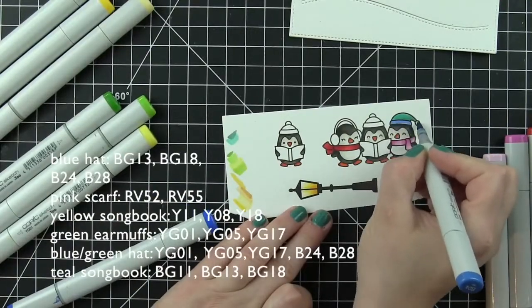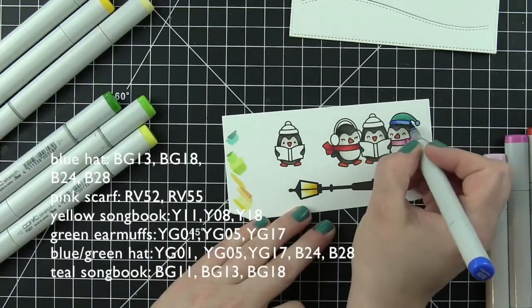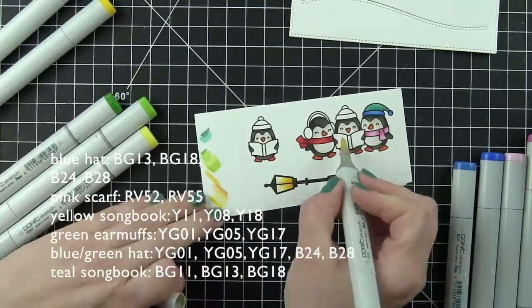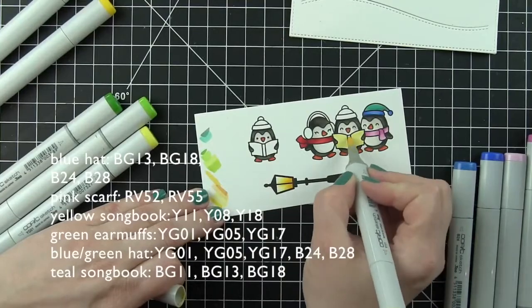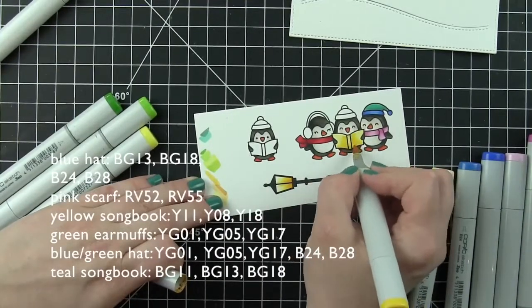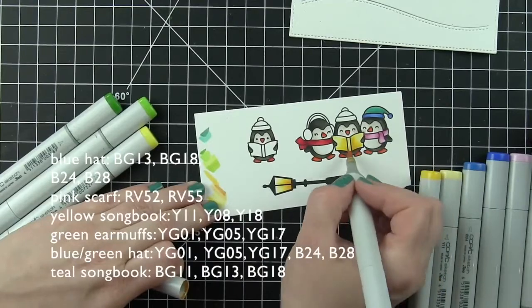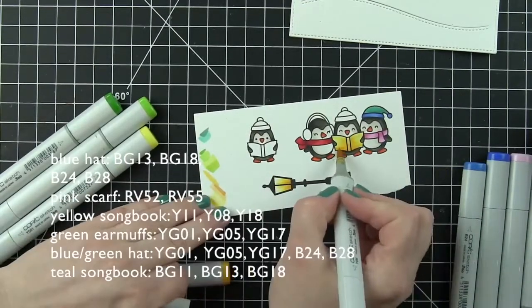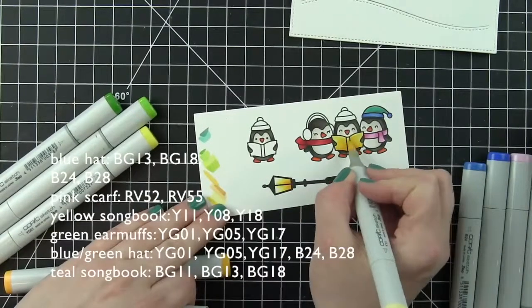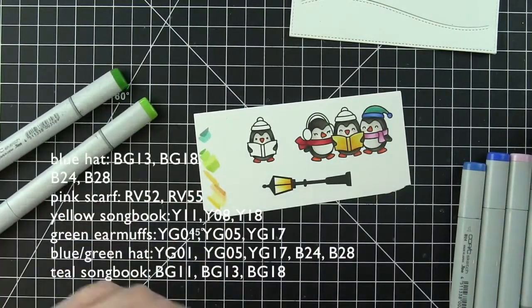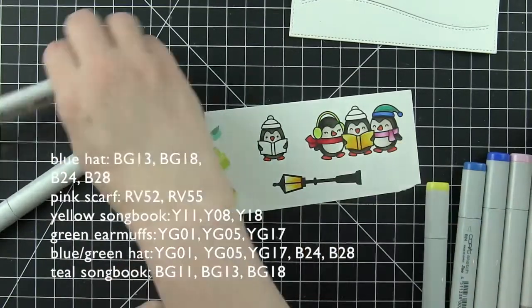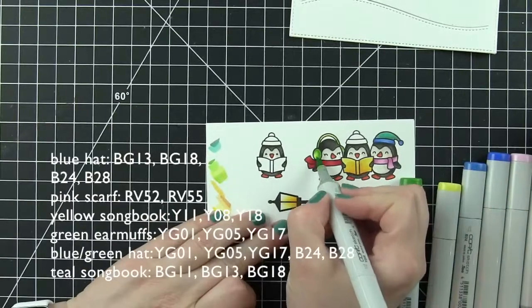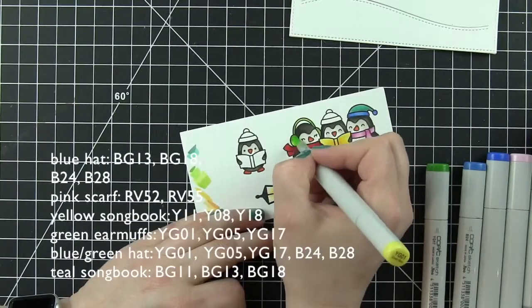In this case, I'm going to do quite a bit of white pen work and some glossy accents to really finish them off nicely. Any additional accessories I'm coloring are listed along the left and bottom of the screen, starting with the blue hat, pink scarf, yellow songbook, green earmuffs, blue green hat, and teal songbook. I wanted these to be really bright and fun. In my mind, I was thinking rainbow colors to make this super bright and fun.